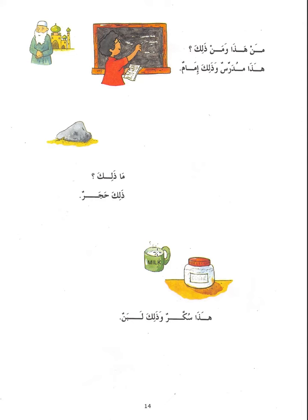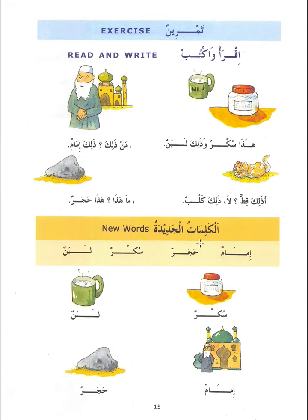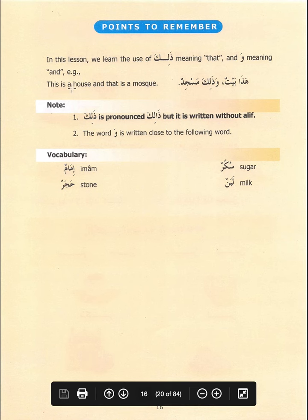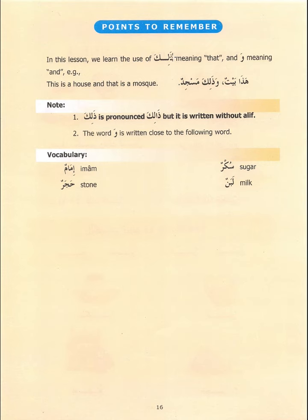Remember these new terms and put them in your notepad. New words: إمام، حجر، سكر، لبن. سكر means sugar, لبن means milk, إمام means the imam of the masjid, and حجر means stone. The main points to remember are: ذلك and how to use it — it means 'that' — and the واو, which means 'and.' The واو is written close to the following word, not the word before it.